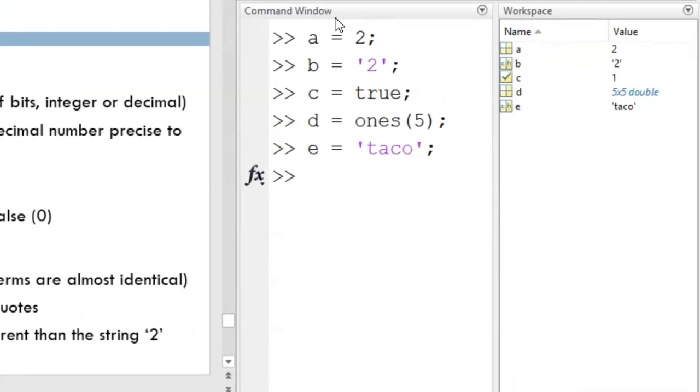Notice that I have defined some variables already. When I did that, those variables were stored in the workspace. The symbol next to each variable shows the data type. Notice we see the numeric grid for a and d, we see the character array ch for b and e, and we see the logical checkmark for c.